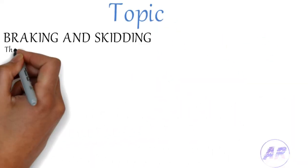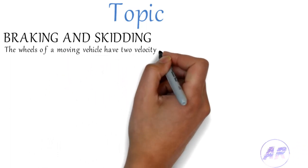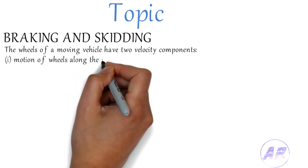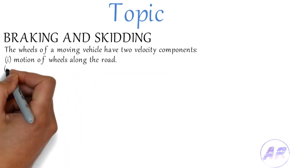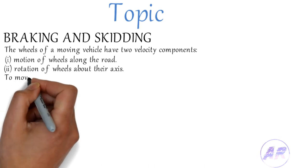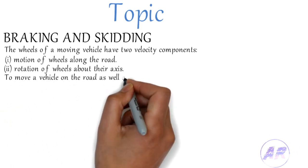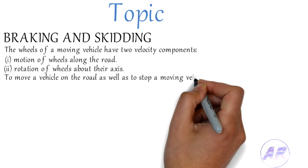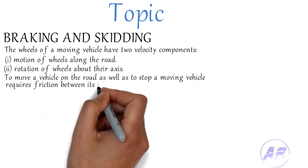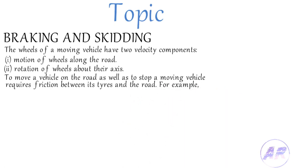Breaking and skidding — the wheel of a moving object has two velocity components: motion of the wheels along the road, and rotation of the wheels about their axis. To move a vehicle on the road, as well as to stop a moving vehicle, requires friction between its tires and the road. For example, a car skidding.